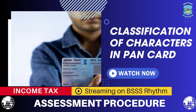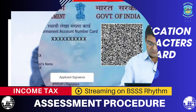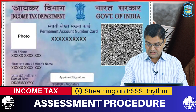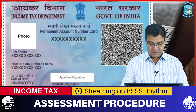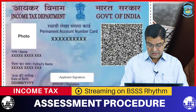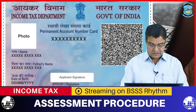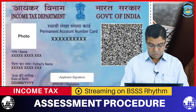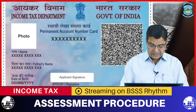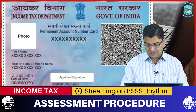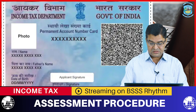Now, classification of characters in PAN card. Out of these 10 digits of PAN card, the first 5 figures represent alphabets, the next 4 digits are numbers, and the last character is again an alphabet. All these digits have some meaning and reveal the information of the account holder. For better understanding, we have divided the 10 characters of PAN card into 5 parts.